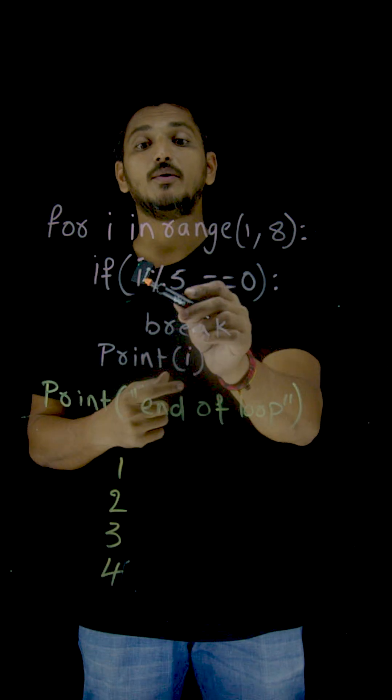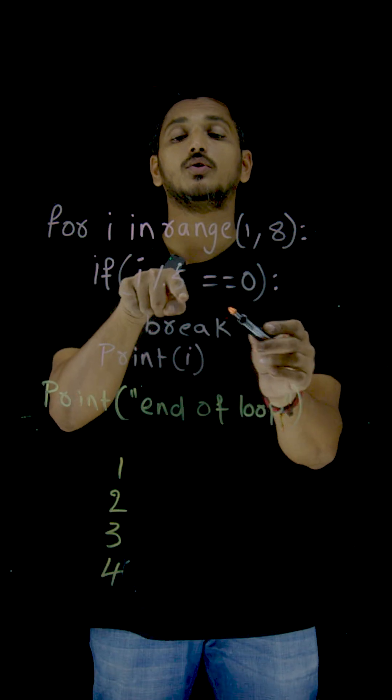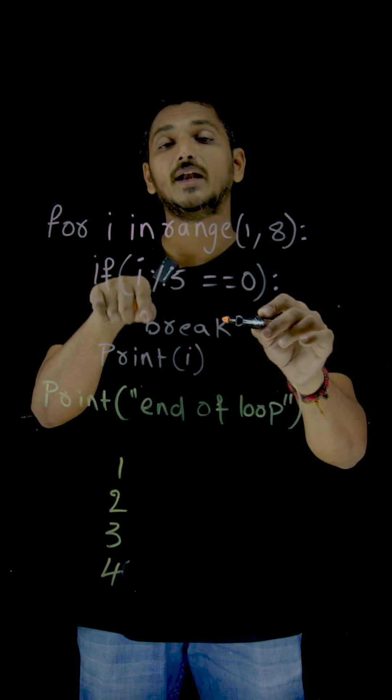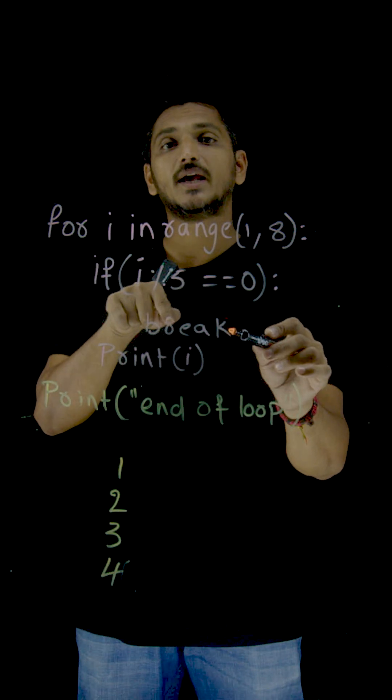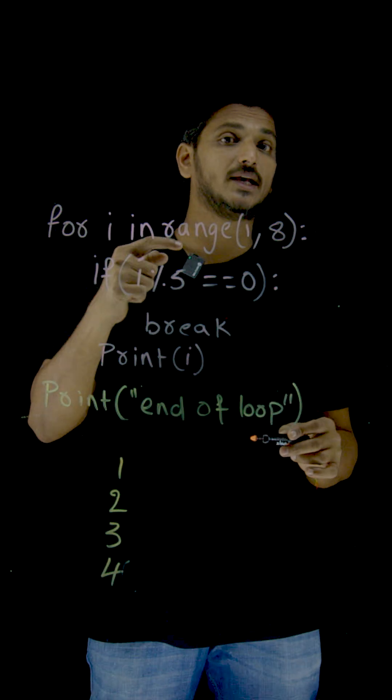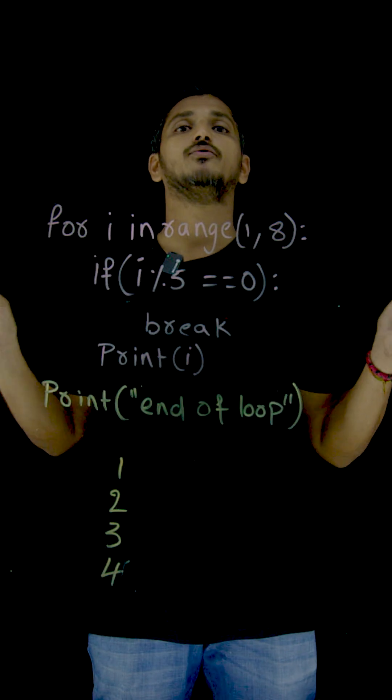Next value is 5. 5 modulus 5 equal to 0. The condition is true. Go inside and execute the statement. What is the statement? We got break statement. Whenever you encounter break statement, come out of the loop.